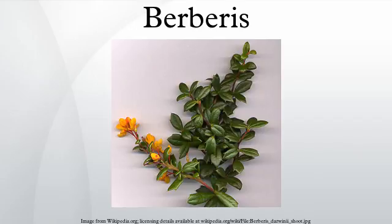The bud in the axil of each thorn leaf then develops a short shoot with several normal, photosynthetic leaves. These leaves are 1–10 cm long, simple, and either entire or with spiny margins.